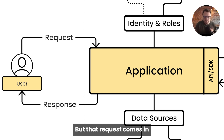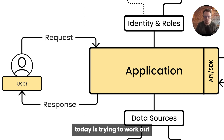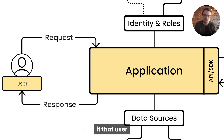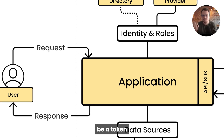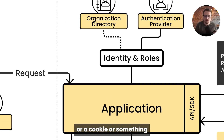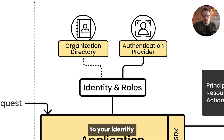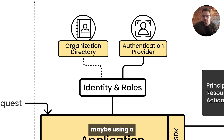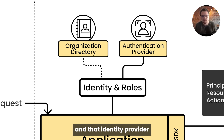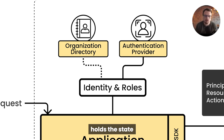But that request comes in. And the first thing your application will be doing today is trying to work out: is that user authenticated? So there'll be a token or a cookie or something. And that will go off to your identity provider, be it something in-house, maybe using a third-party service. And that identity provider holds the state about that user.